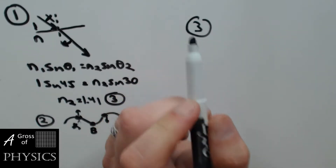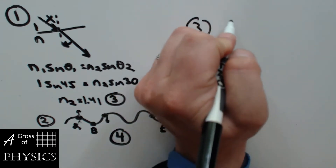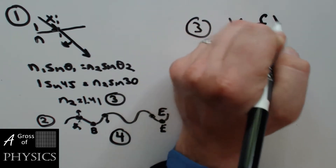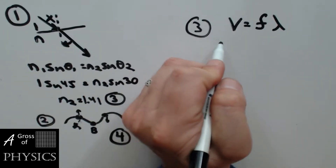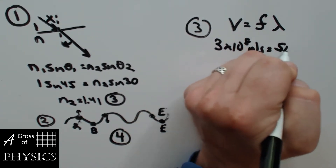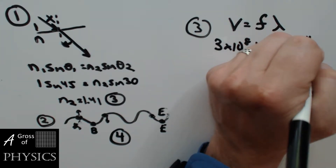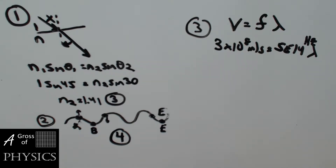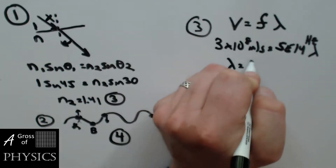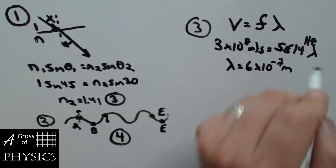Let's look at three. In a vacuum, light with a frequency of 5 times 10 to the 14 hertz has a wavelength of... Using V equals F lambda: 3 times 10 to the 8 meters per second equals 5×10¹⁴ times lambda. So 3×10⁸ divided by 5×10¹⁴ gives us 6 times 10 to the negative 7 meters. Choice two.